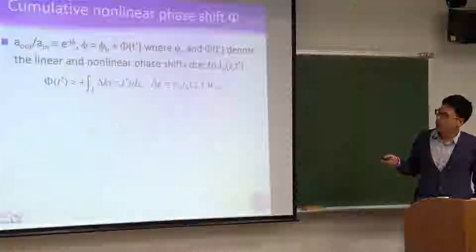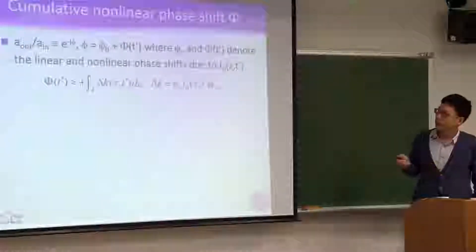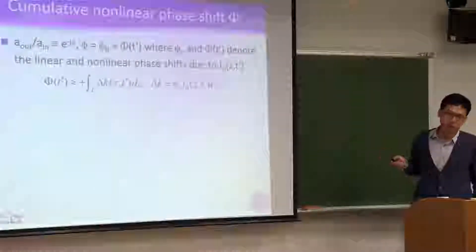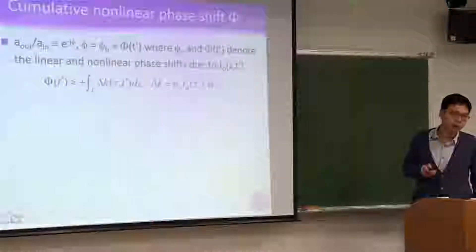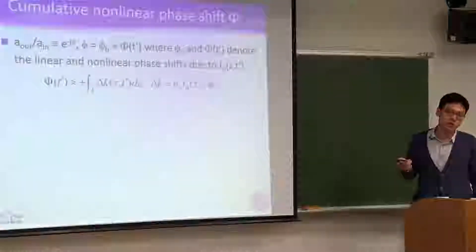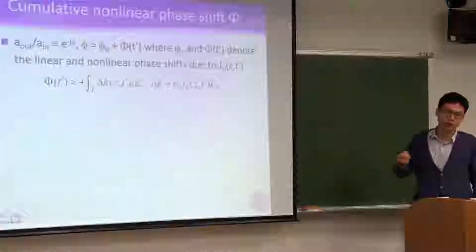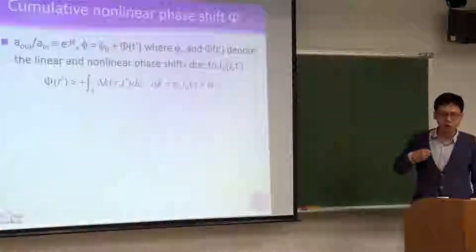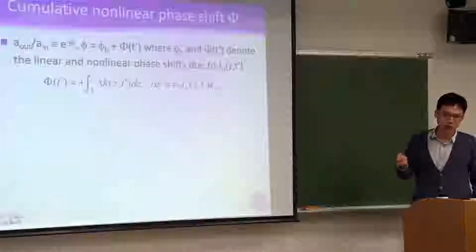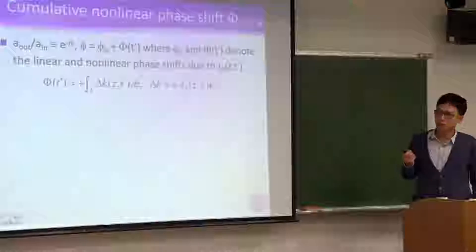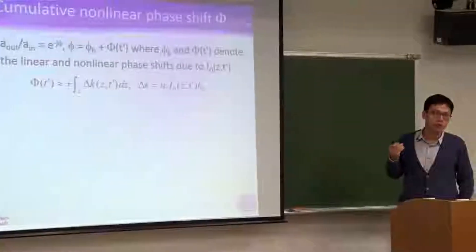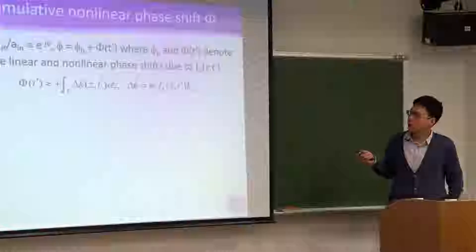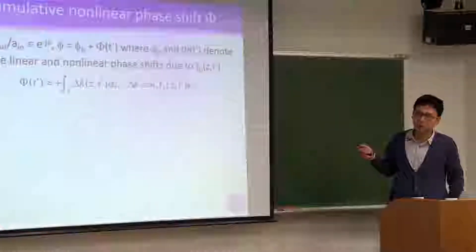Phi b is the linear phase shift, and big phi means the nonlinear phase shift. Linear phase shift means whenever you have a refractive index and a propagation distance, you must incur the linear phase shift — but it's independent of SPM. What matters is the second term, big phi.